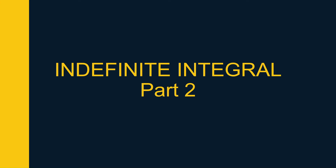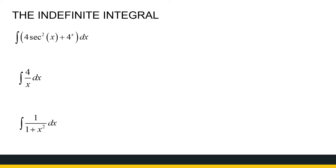Let us look at some more examples of straightforward indefinite integrals. Here we have 4·sec²(x). Hopefully you remember that the derivative of tan(x) is sec², so that gives us 4·tan(x). For 4 to the power x, we have a rule: it's 4^x over ln(4). Remember, you can always check by finding the derivative. Plus c.